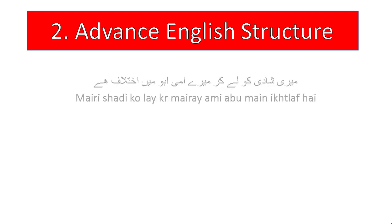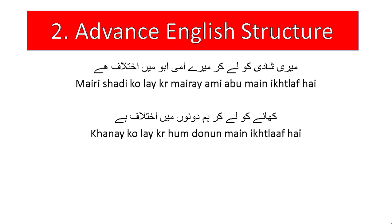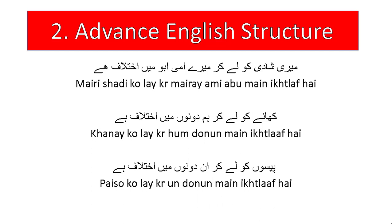I hope that structure is understood. Now let's look at the next one. For example, if you say something like: regarding my marriage, my Ami and Abu have a disagreement — or my parents have a disagreement. It happens when your mother says: I want to bring my brother's daughter, and your father says: no. Or regarding food — we two have a disagreement. It happens between husband and wife, or between brothers. Or regarding money — there's some issue and the two of them disagree: one wants to invest the money, the other doesn't.